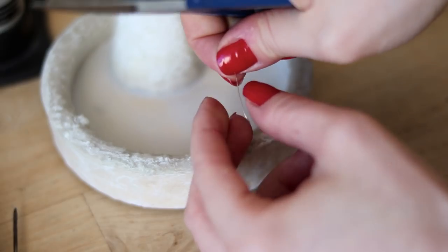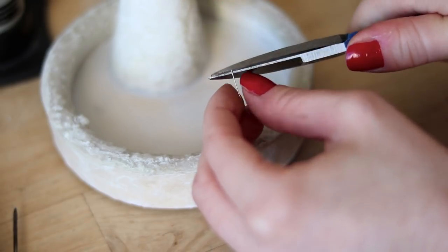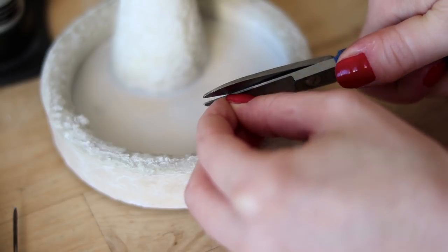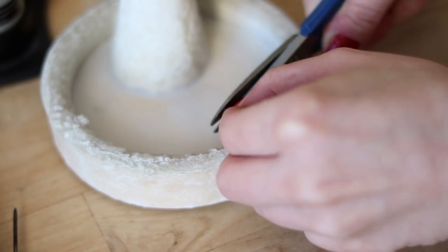I cut it directly into the flux in the dish so it doesn't get lost. Small pieces, about 2-3mm, are fine for this project.